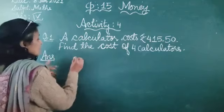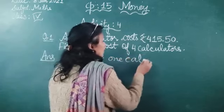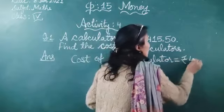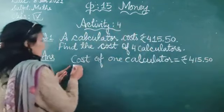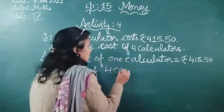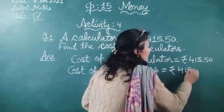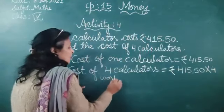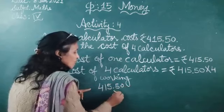Now we write the statement. First, we write: cost of one calculator is equal to rupees 415.50. That means, in the second line, we write: cost of 4 calculators is equal to rupees 415.50 multiplied by 4. Now we do the working. Write 415.50 multiplied by 4.